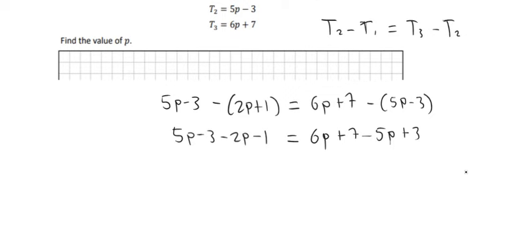Right, put the P's together so we have 3P minus 4 is equal to P plus 10. Bring the P across we have 2P is equal to 14, so P is equal to 7. And that's all for part A.